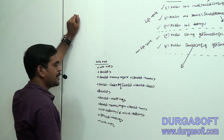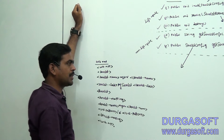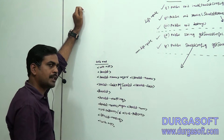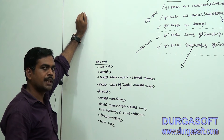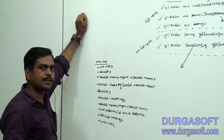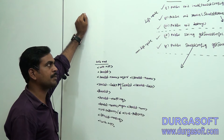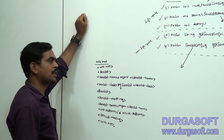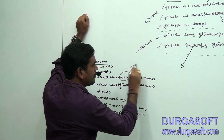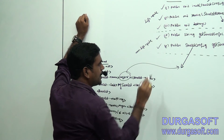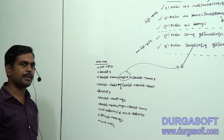If we want to find the servlet name, then we have to use servlet config. As well as if we want to find the init-param values, we have to use servlet config. That is the purpose of servlet config. Servlet name means this is the servlet name. If we want to find the servlet name, we have to go for servlet config.